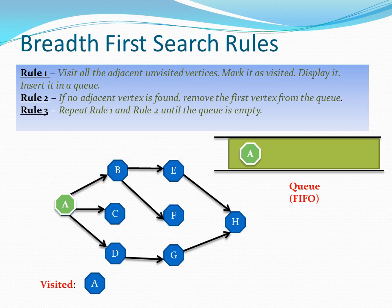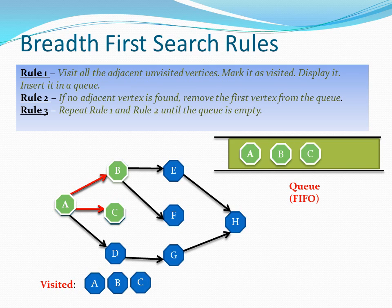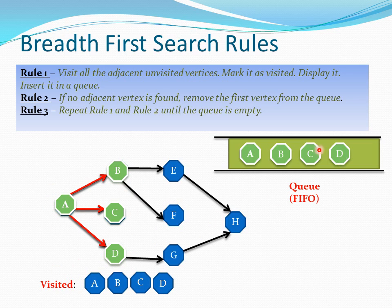Mark them as visited, display them, and insert them in the queue. For vertex A, we have three unvisited vertices: B, C, and D. Let us visit them one by one. First, I'm visiting B and inserting it into the queue. Next adjacent vertex is C, let us visit that. And it has one more adjacent vertex, let us visit that as well. We have now visited all the adjacent unvisited vertices of A and marked them as visited, keeping all of them in our queue.